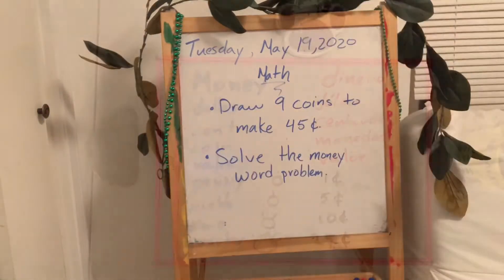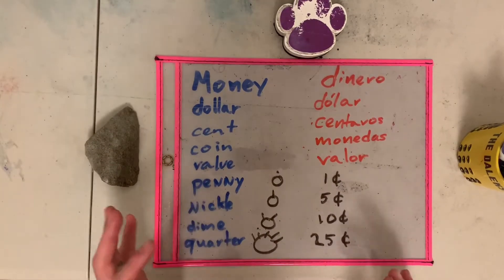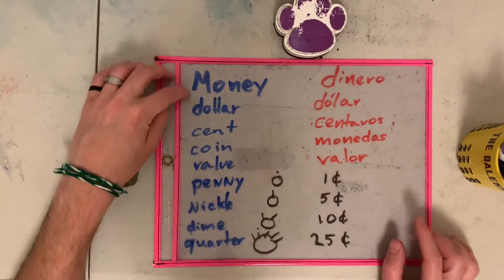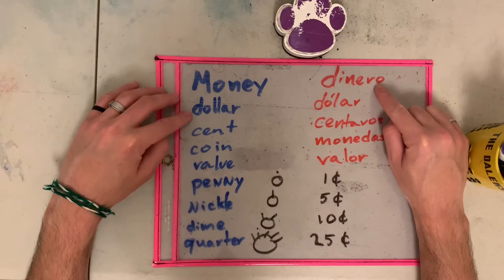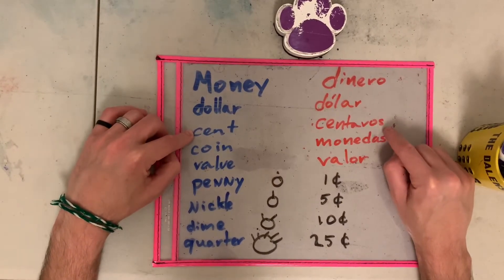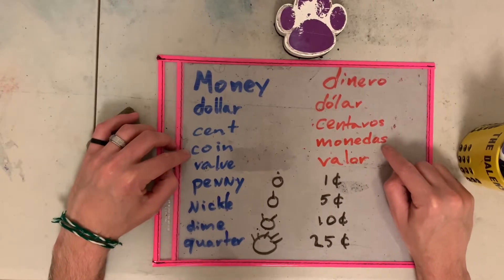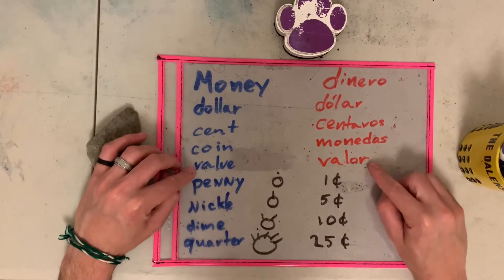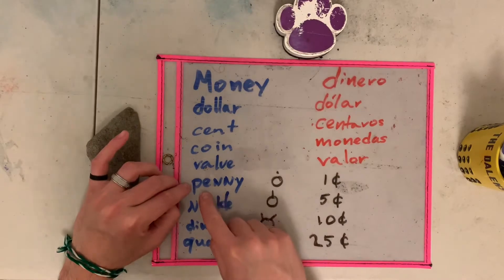The vocabulary words that we learned yesterday are money, dinero, dollar, dólar, cent, centavos, coin, monedas, value, valor. And then we learned penny.